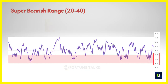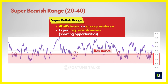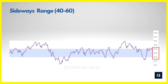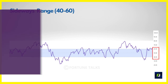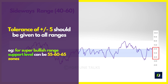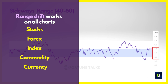The fourth range is the super bearish range, where RSI oscillates between 20 and 40. Whenever RSI reaches 40 it is a very good selling opportunity, targeting 20, as 40 acts as a resistance level. The fifth is the sideways range, where RSI oscillates between 40 and 60-65, indicating the market is range-bound. A five-point tolerance of 60 to 65 is taken because some stocks work well with 65 as resistance while others work with 60. This range shift logic applies to all chart types — indices, stocks, commodities, currencies.